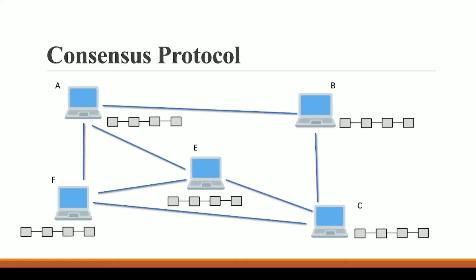As we discussed in our immutable ledger video, if a hacker tries to manipulate any central or middle block of a blockchain, then all the blocks after that block will get affected. By this, the other nodes that are part of this blockchain network will be able to identify that there is some mistake, and they will correct it.